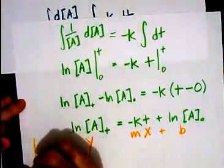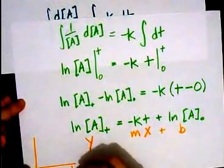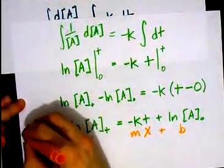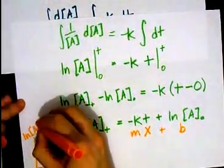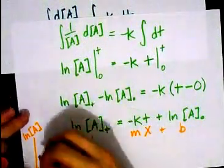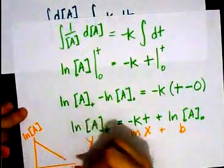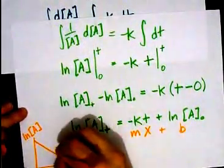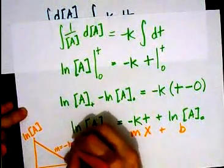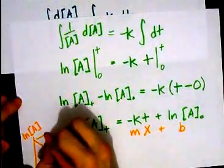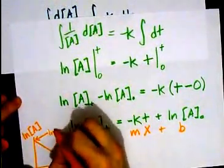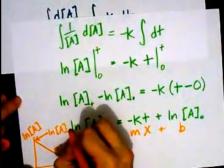Let me emphasize what I mean. I put time on my x and I graph ln of concentration on my y. I'm going to get a straight line.